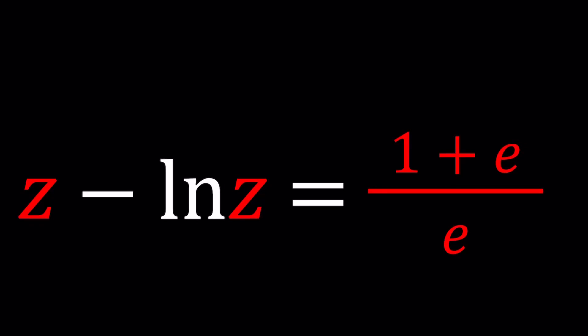Hello everyone. Welcome to A plus BI. This channel is all about complex numbers. In this video, we're going to be solving a very complex equation. We have Z minus ln Z equals 1 plus E all over E, and we're going to be solving for Z values.